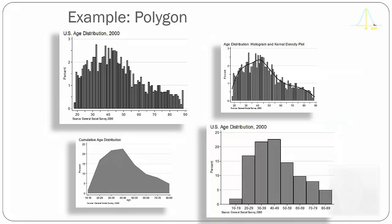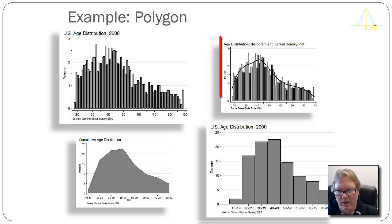Sometimes we could average out some of those ups and downs by superimposing a line over it, as I've done on the upper right. What I've done is I've produced the same bar chart and then something called a kernel density plot laid over it.